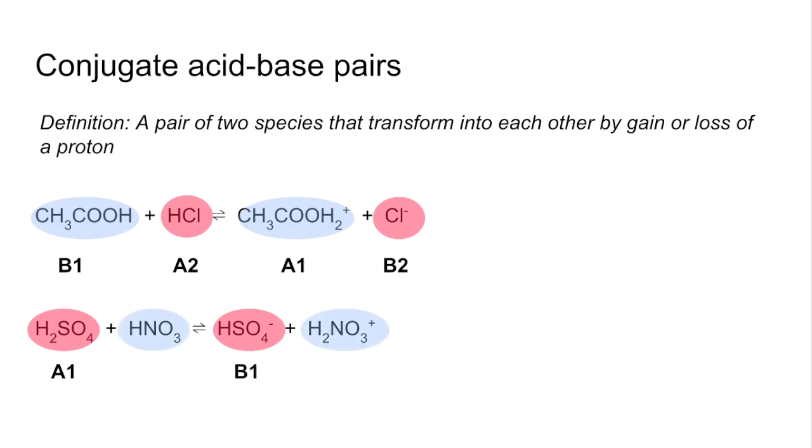There's the other pair. Obviously the nitric acid must be accepting the proton from the sulfuric acid. So that's B2, and its conjugate acid is that one there.